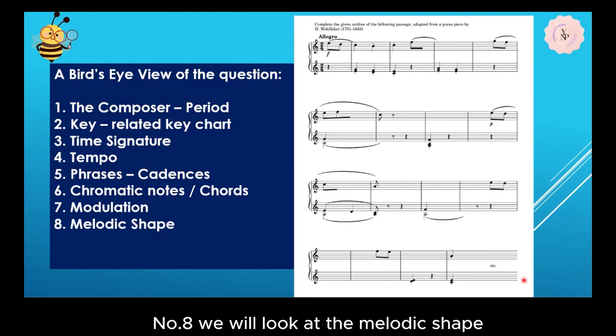Number eight, we will look at the melodic shape. The melodies are mostly stepwise movement, only a few leaps. Number nine is the rhythmic pattern. We can observe the two quavers pattern or the four quavers pattern, and the rest are all crotchets with some rests here and there.